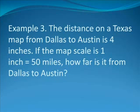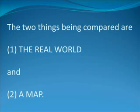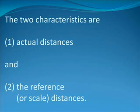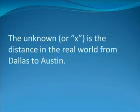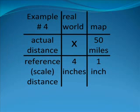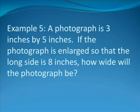Example number three: The distance on a Texas map from Dallas to Austin is 4 inches. If the map scale is 1 inch equals 50 miles, how far is it from Dallas to Austin? The two things being compared are the real world and a map. The two characteristics are actual distances and the reference or scale distance. The unknown is the distance in the real world from Dallas to Austin. This is how the tic-tac-toe board should be filled out.